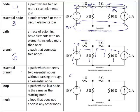An essential branch is a path which connects two essential nodes without passing through an essential node. Since the node at the top of the 10 volt is not essential, we could not say that's an essential branch. However, we do have essential branches for the 5 ohm, the 2 ohm, the 10 ohm, and the 2 amp. So there would be 4 essential branches.